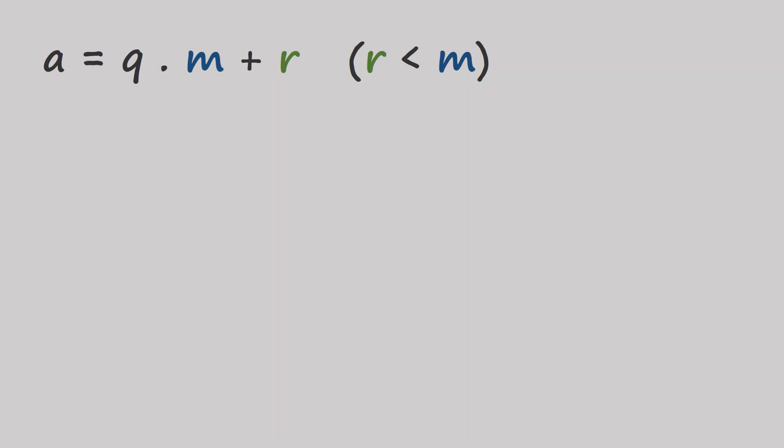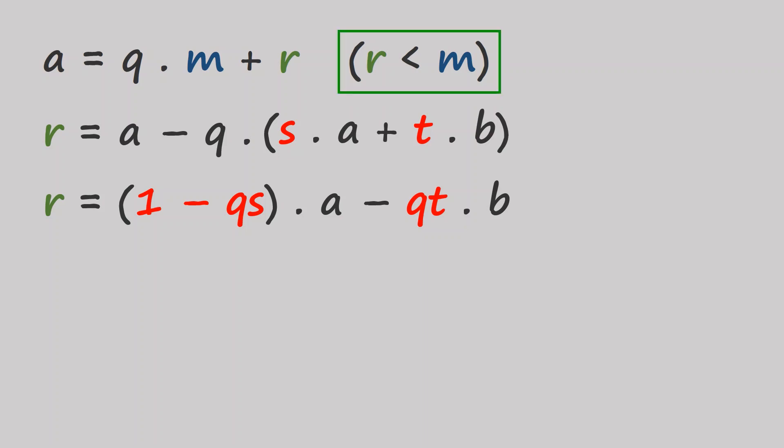We know that r is a minus qm. And that's just addition and subtraction of linear combinations. Which means that r itself is a linear combination of a and b. But r is less than the smallest linear combination of a and b. This can only mean that r is zero. And that m divides a. The exact same argument can also be made for b.